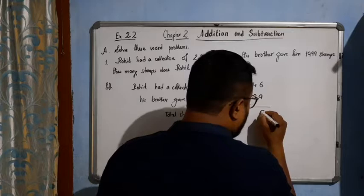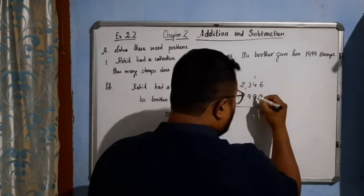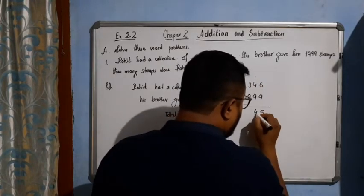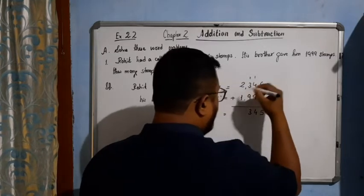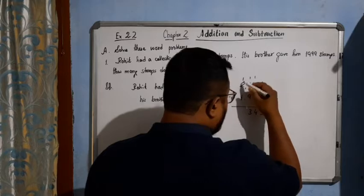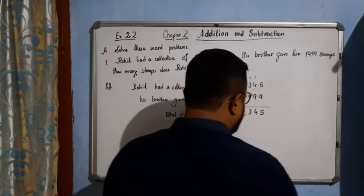9 plus 6 is 15, carry 1. 9 plus 1, 10 plus 4, 14, 4, carry 1. 1 plus 9, 10 plus 3, 13, 3, carry 1. 2 plus 1, 3 plus 1, 4. So, 4,345.